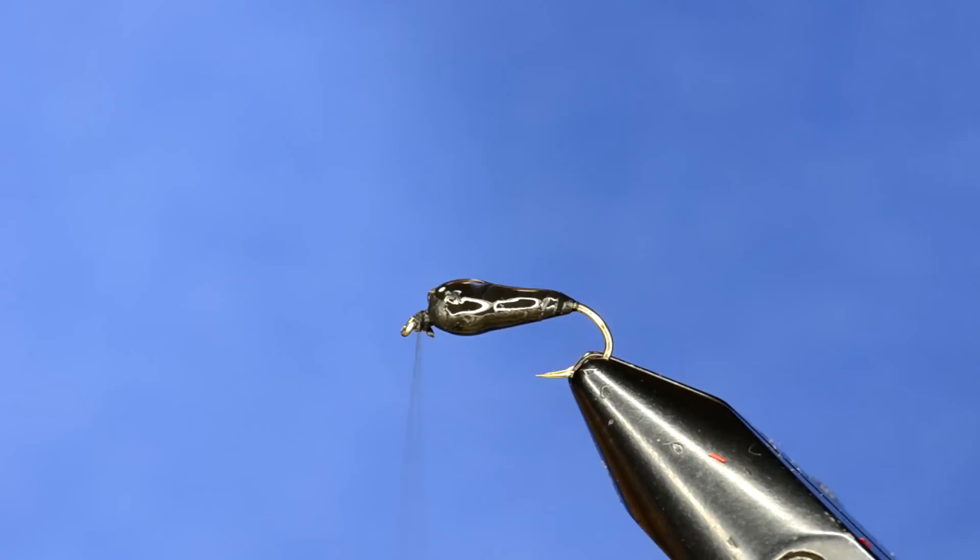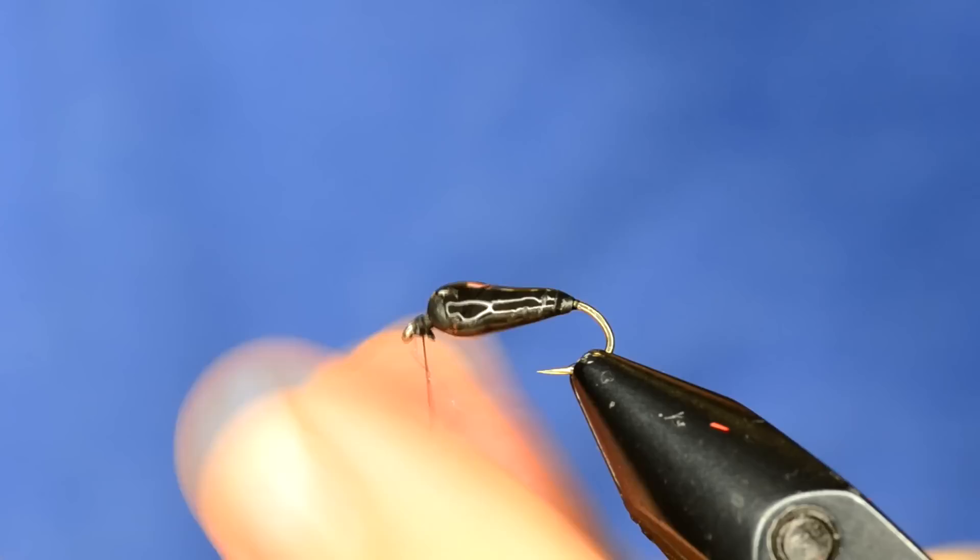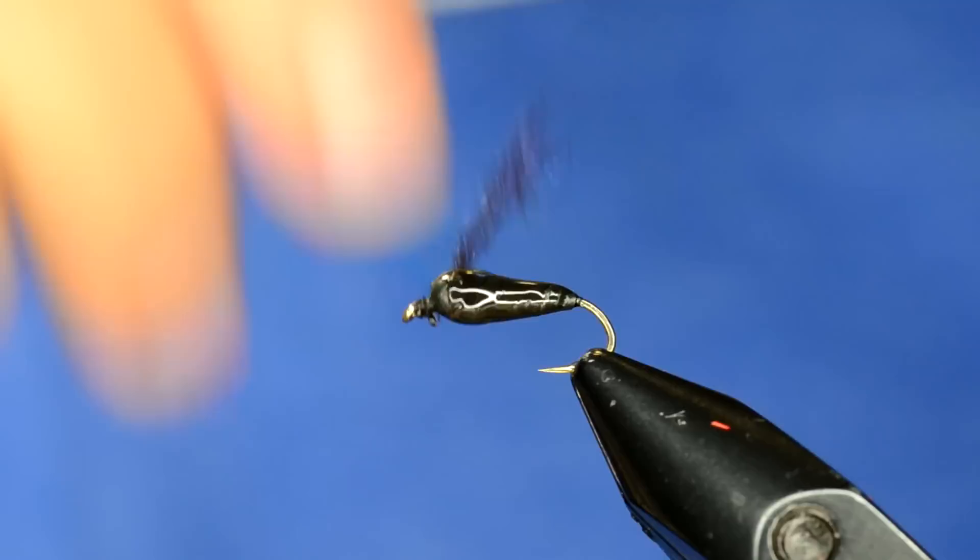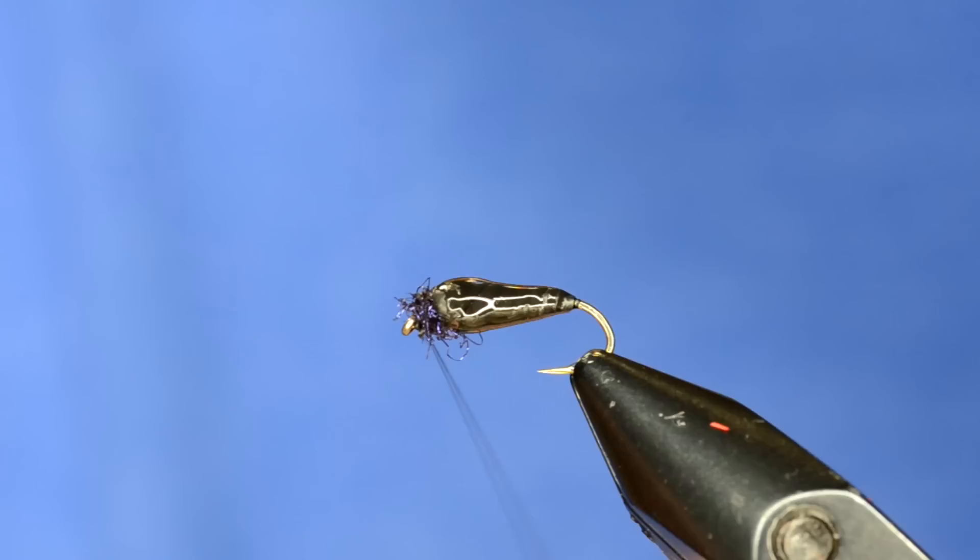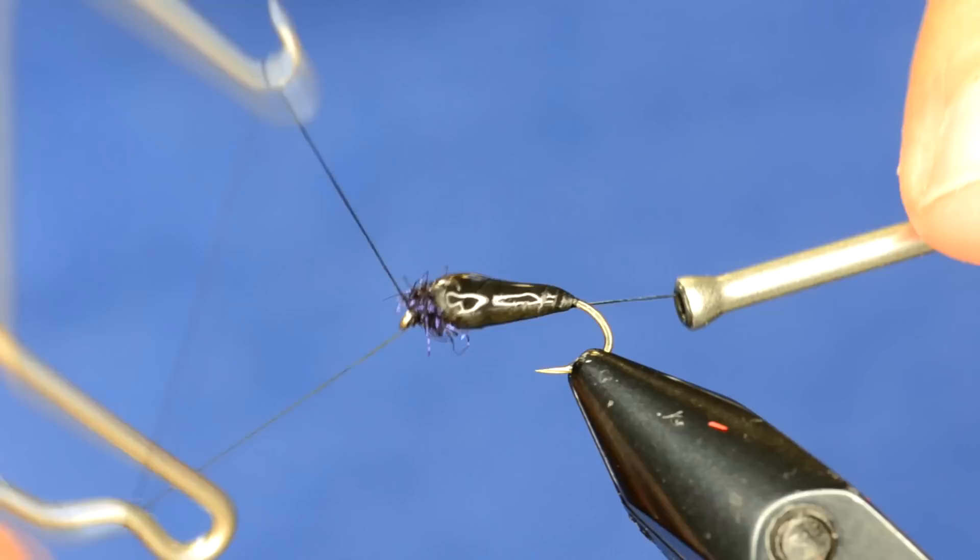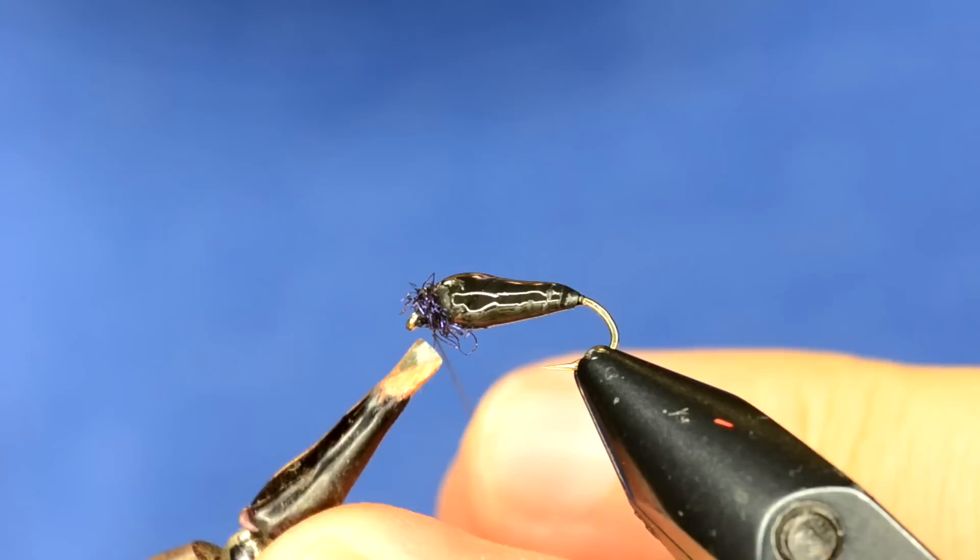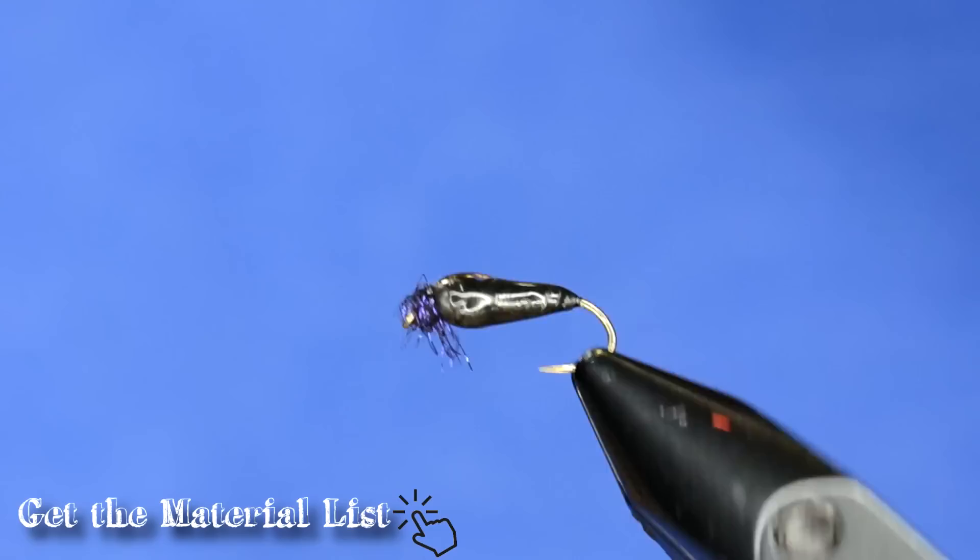All right, and then just one final step, we're going to take a little bit of black ice dub. And just a very little bit because you don't have a whole lot of room up here. And butt that up against where we stopped with the UV. And then whip finish. And that dubbing just represents the little snail peeking his head out of his house. And there we go.